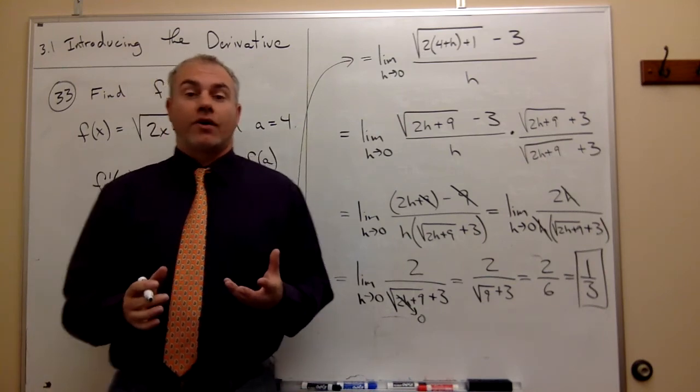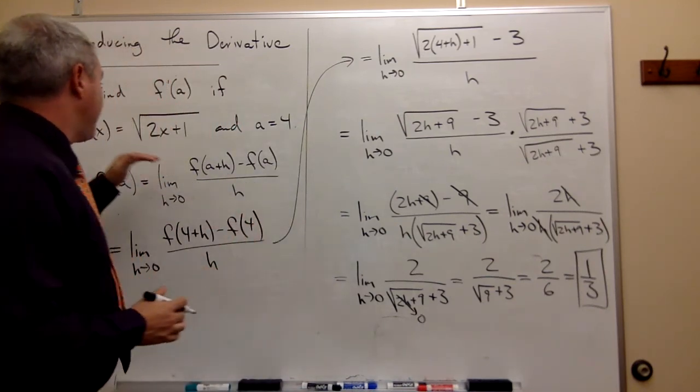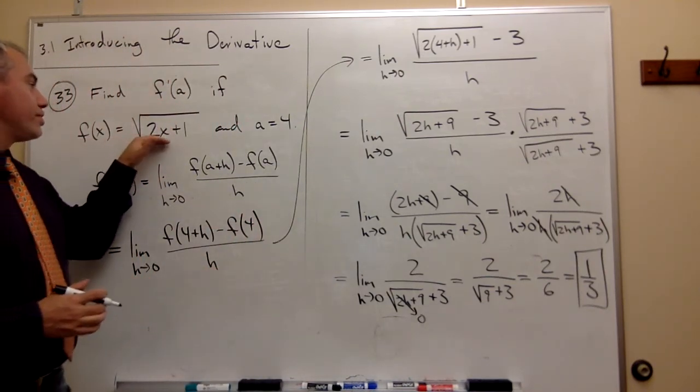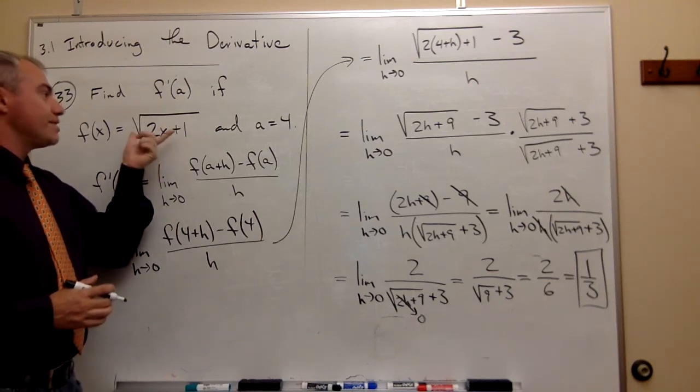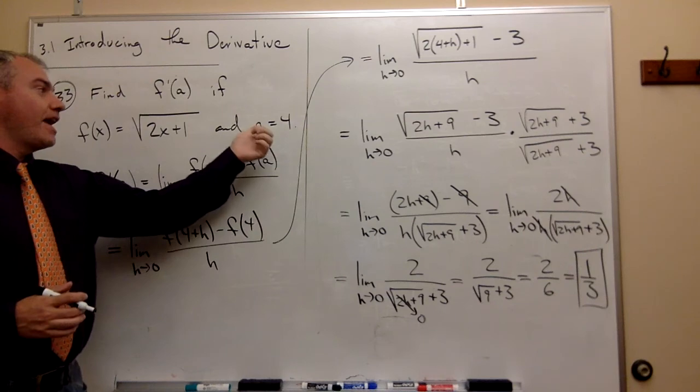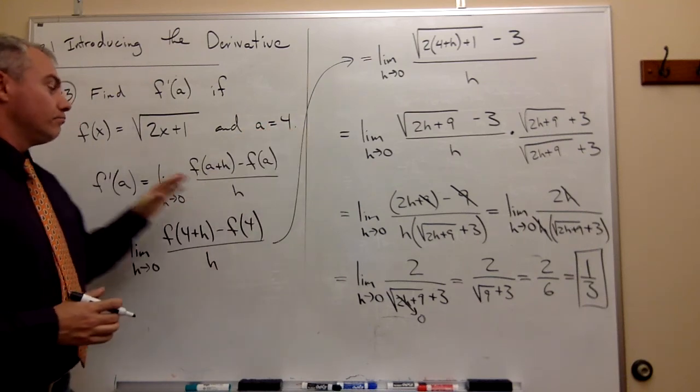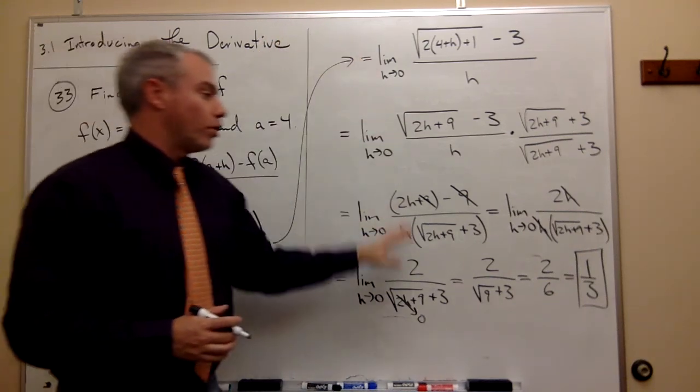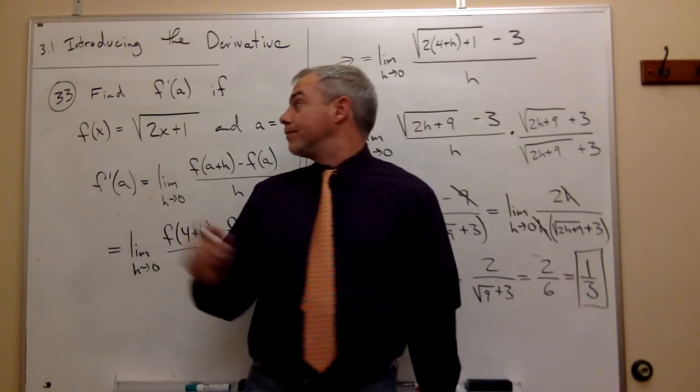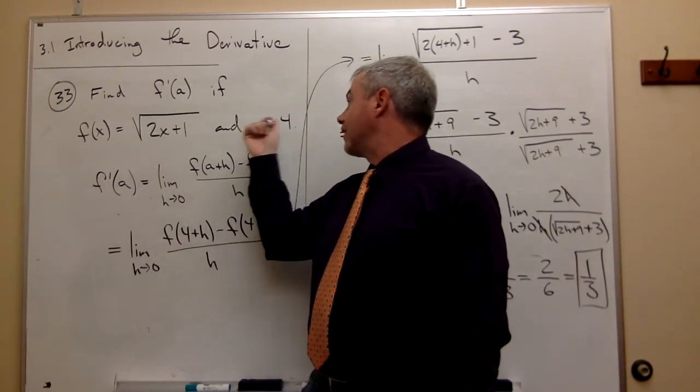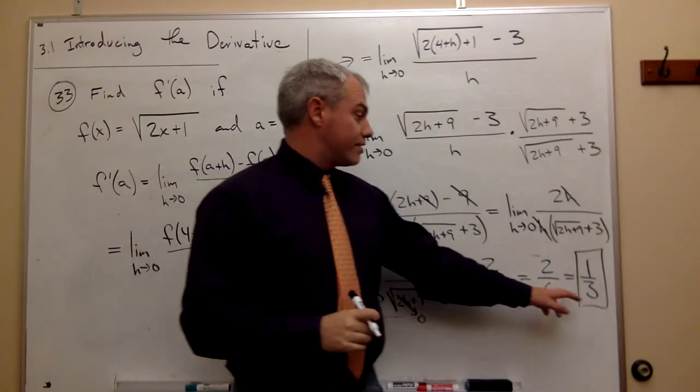So what did we just figure out? We figured out that if I have this function square root of 2x plus 1 and I want to evaluate what is the derivative of this function at a equals 4, I plug it in, I do some work, and I figure out that the slope at the a value or x value 4 is 1 third.